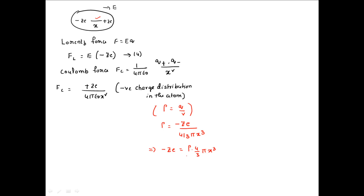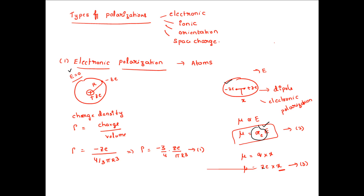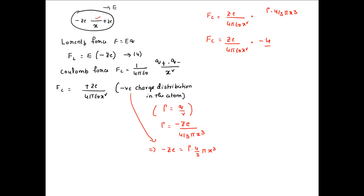We substitute the negative charge distribution into the Coulomb force expression: Fc = ZE / (4πε₀x²) × ρ × (4/3)πx³. Substituting ρ = −3ZE / (4πr³) from equation 1, the 4/3 and 3/4 cancel, and π cancels, leaving Fc = −Z²E² × x³ / (4πε₀x²r³).